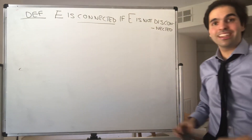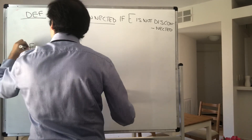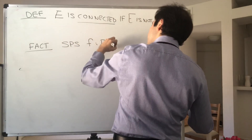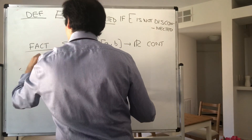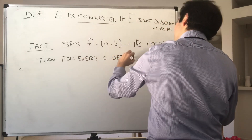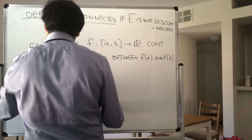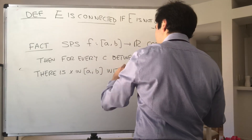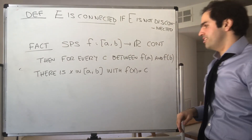Why is connectedness so important? Well, let me give you almost a two-second proof of the intermediate value theorem. So: suppose you have a function f from [a,b] to R that is continuous. Then for every C between f(a) and f(b), there is an x in [a,b] with f(x) = C. And in fact, I believe this also holds for any connected set.